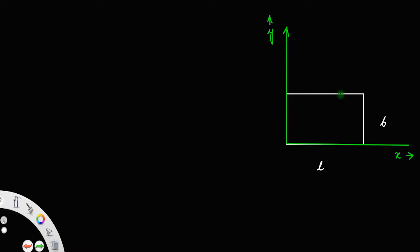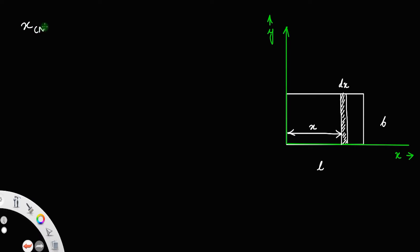Now, let us consider a thin rectangular strip like this. Let the thickness of the strip be dx and the distance from the y axis be x — that is, this distance be x. We have the formula for the center of mass: the x coordinate of center of mass x_cm is equal to the integral of x dm divided by the integral of dm. This is the formula by which we can find the x coordinate of the center of mass, where dm means the mass element.